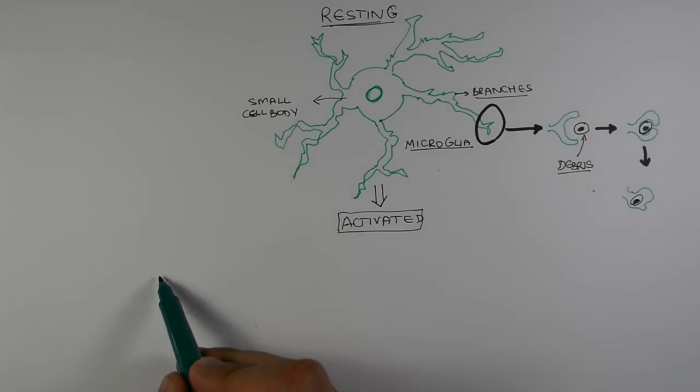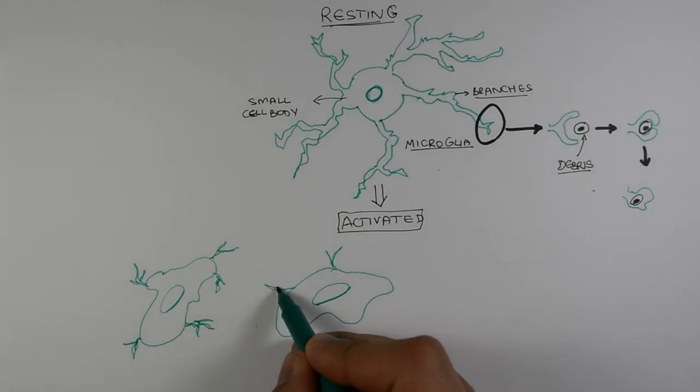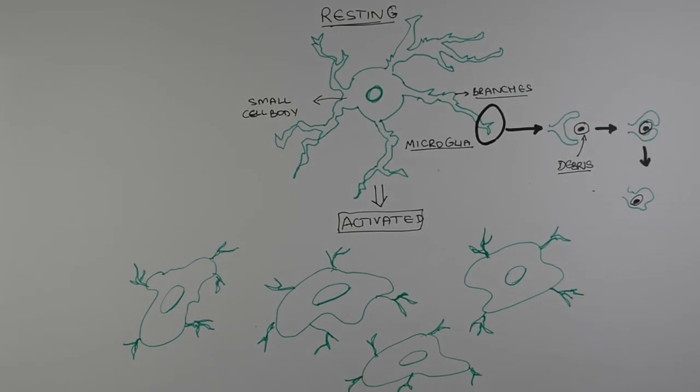These cells are activated in case of an injury to the brain or an infection. In the active state, microglia pull in their branches and divide to increase their numbers within the brain. Activated microglia have been found in very early stages of ALS, even before muscle weakness begins, potentially linking these cells to the development of the disease.